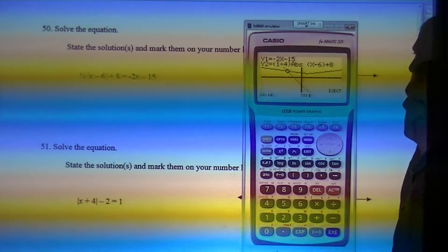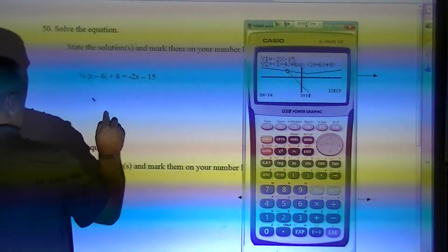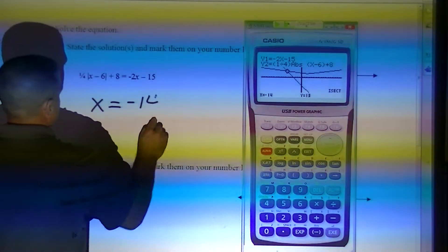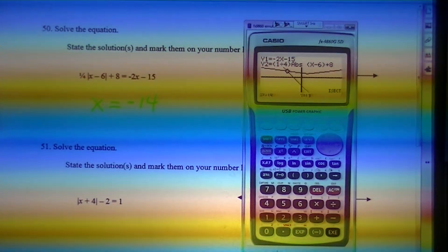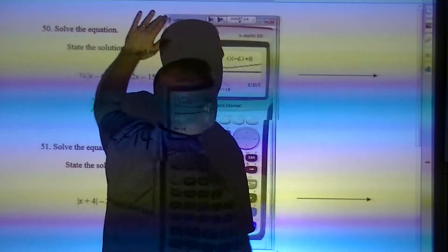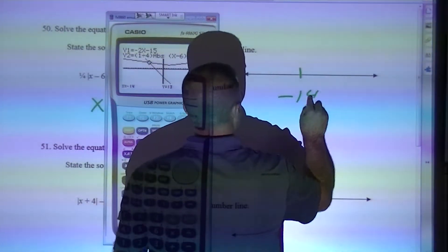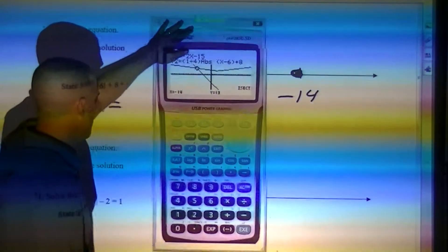G solve, intersect. I get an answer of negative 14. So I get x equals negative 14. Make sure that makes sense. Negative 8, I get 20. Yeah, that's good. So what I do, since it's one answer, it's negative 14 with a filled in circle. Moving on.